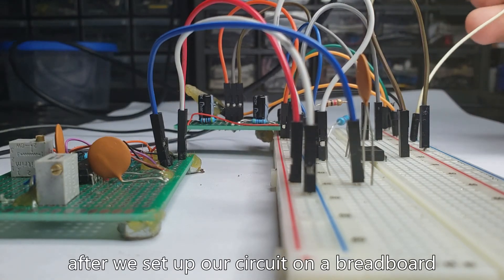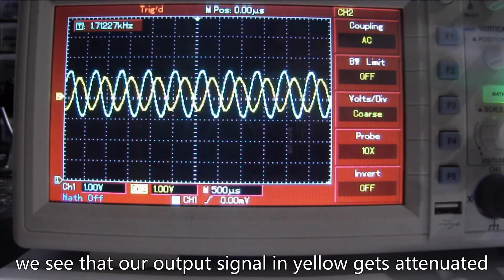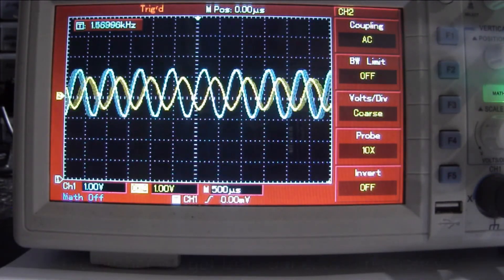After we set up our circuit on the breadboard and connected the oscilloscope, we see that the output signal in yellow gets attenuated the further we get from our cutoff frequency.